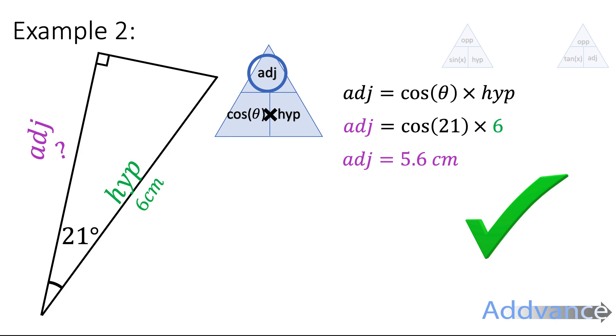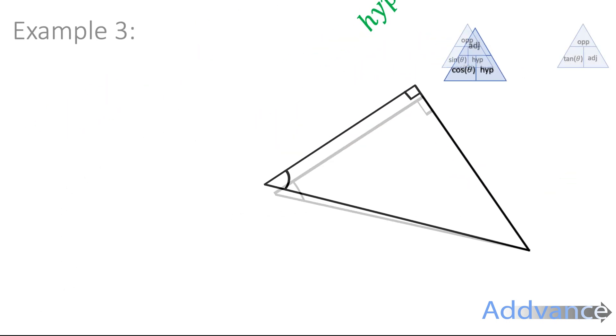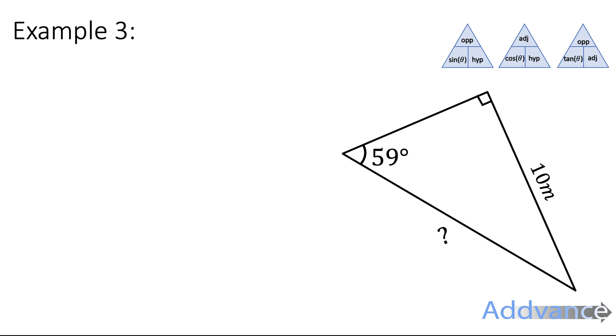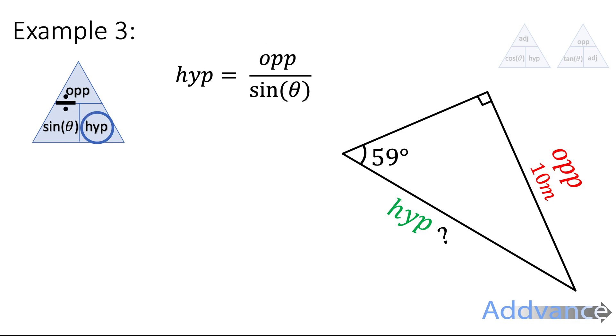Example three, super quick. We've got these sides here. We're interested in the opp and the hyp. That is the SOH triangle. So sine opposite hyp. We want to find the hyp, circle hyp, and it's opp divided by sine. Hyp equals opp divided by sine.